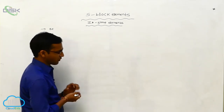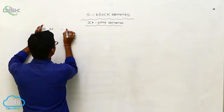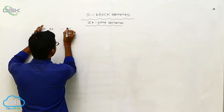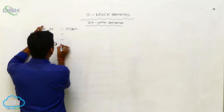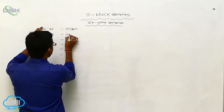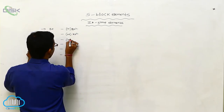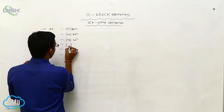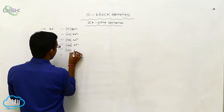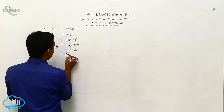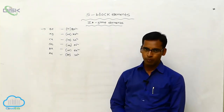The first property is electronic configuration. For beryllium, the nearest inert gas is helium, so its configuration is [He] 2S2. For magnesium, the nearest noble gas is neon, so it is [Ne] 3S2. Calcium is [Ar] 4S2. Strontium is [Kr] 5S2. Barium is [Xe] 6S2. Radium is [Rn] 7S2. These are the electronic configurations of secondary group elements.